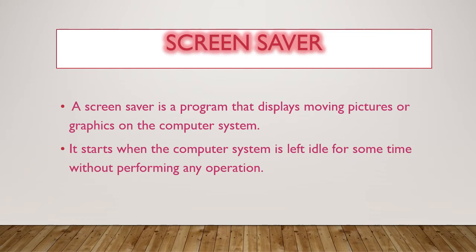The screen saver starts when the computer system is left idle for some time without performing any operation. That means you have switched on your computer, but for 5 or 10 minutes — whatever time limit you have set — when you are not doing anything and the computer is left idle, after that set time limit the screen saver will automatically get activated.